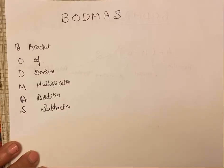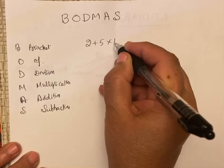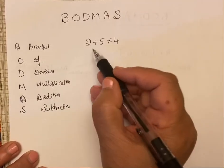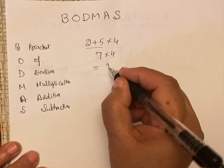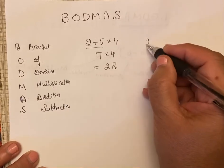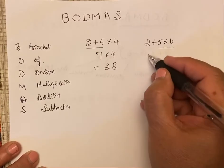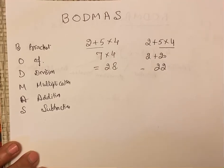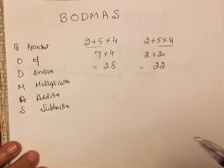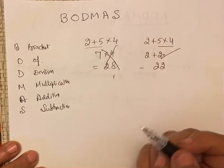If we want to solve any expression like 2 plus 5 into 4, how can we solve it? If we add these two, it becomes 7 into 4 equals 28. In the other way, if we solve like this, first multiply: 2 plus 20, it becomes 22. What is wrong and what is right? Very confusing. This is right and this is wrong.